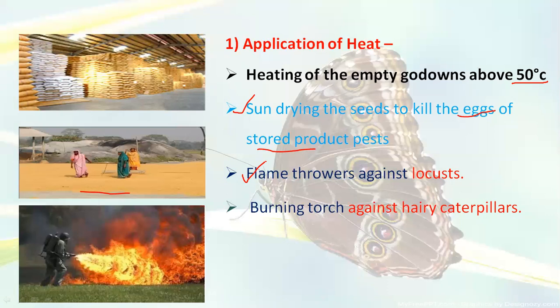The third practice is the flamethrower — burning torches or flamethrower machines used against pests like locusts. Flamethrowers are used to destroy locust plagues. Similarly, burning torches are used against hairy caterpillars to prevent further infestation. Cold storage of fruits and vegetables at one to two degrees Celsius for about 20 days is also used to kill fruit flies, plant maggots, or eggs.